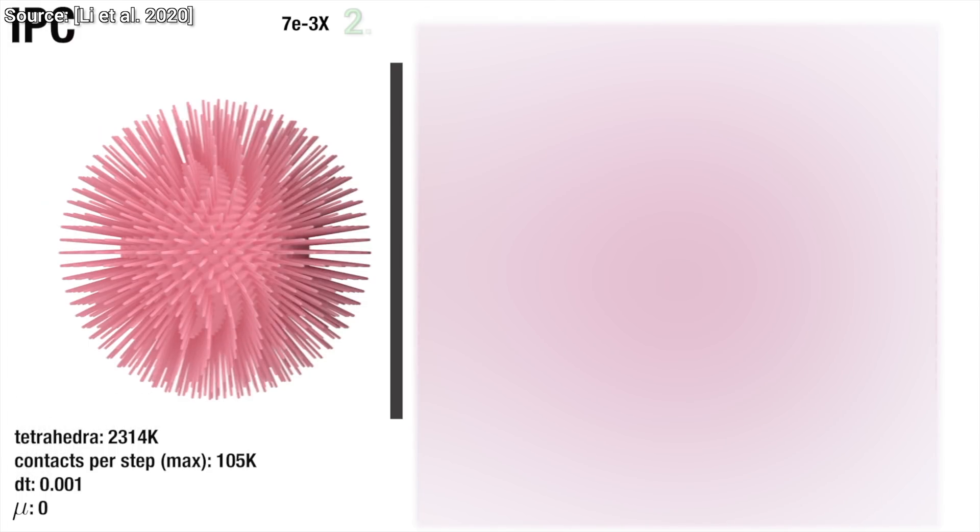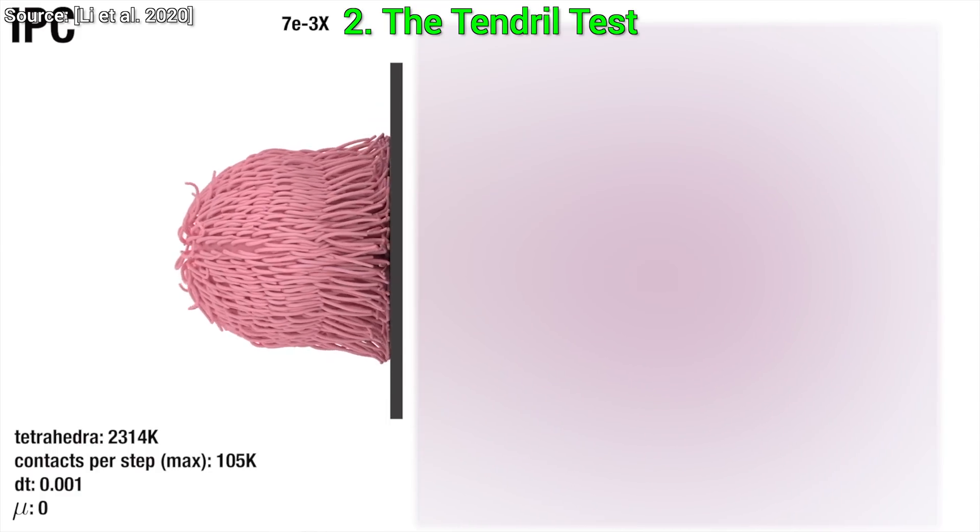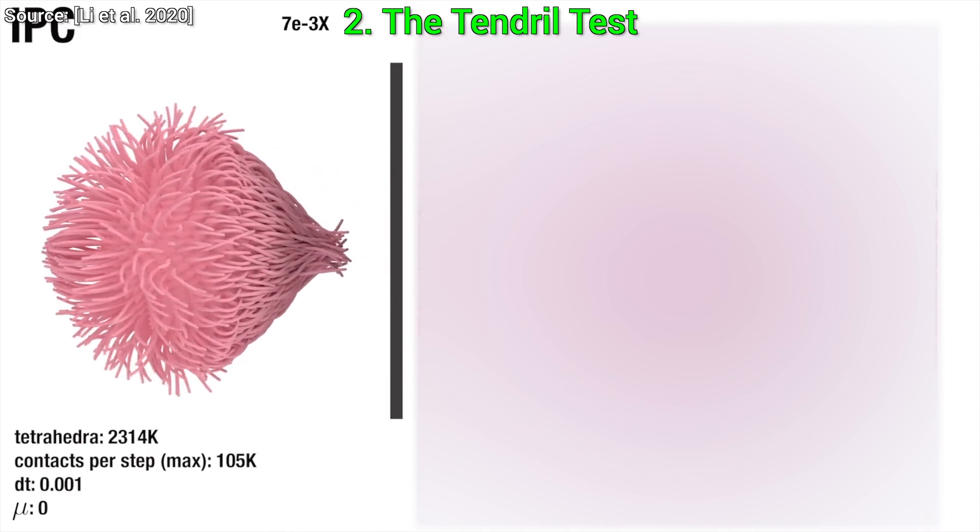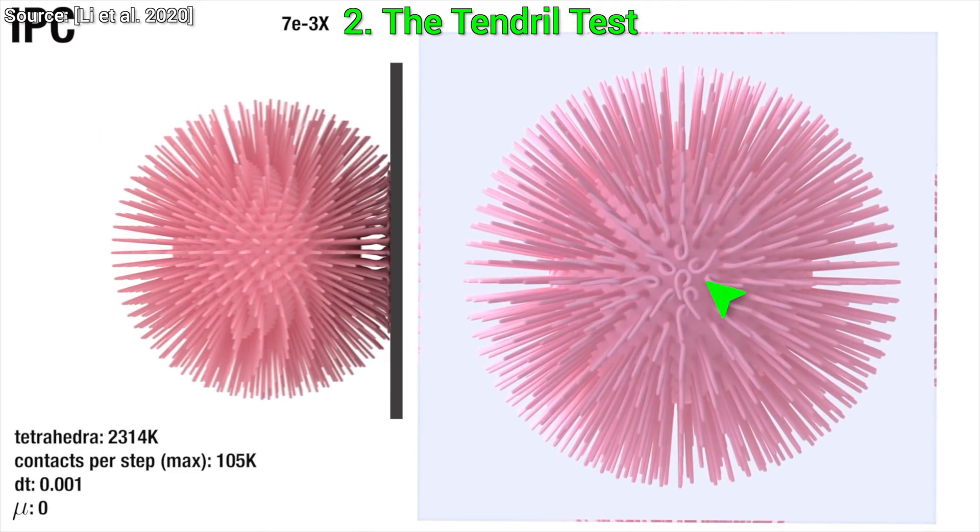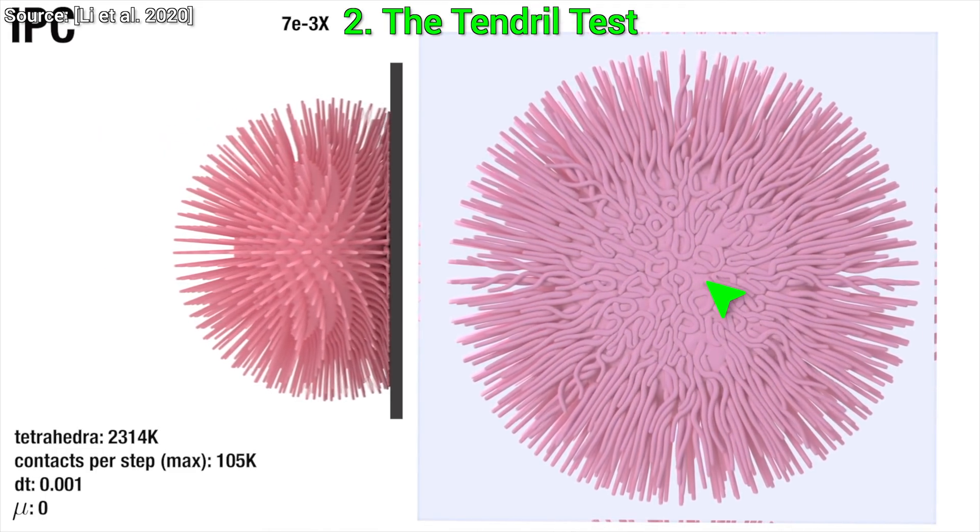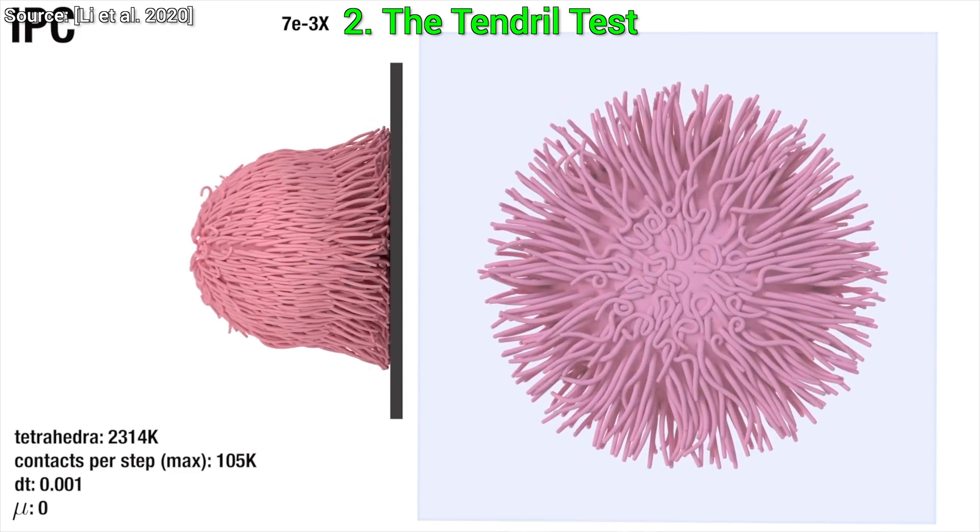Experiment number two: the tendril test. We grab a squishy ball and throw it at the wall, and here comes the cool part. This panel was made of glass, so we also get to view the whole interaction through it, and this way, we can see all the squishing happening. Look, the tendrils are super detailed, and every single one remains intact and intersection-free despite the intense compression. Outstanding.